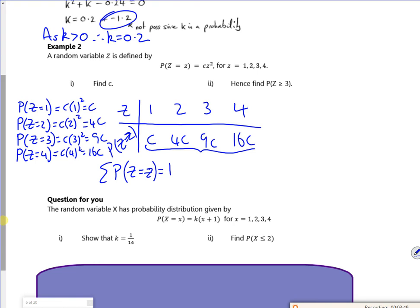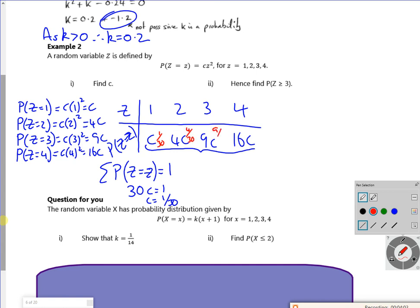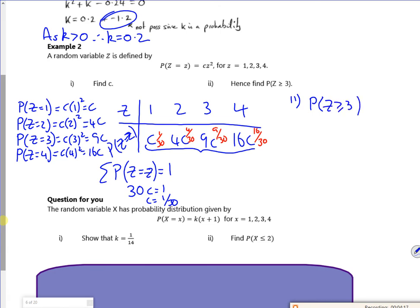So these probabilities are 1 over 30, 4 over 30, 9 over 30, and 16 over 30. And part two says probability that z is greater than or equal to 3. So that's going to be the 9 over 30 plus the 16 over 30, is 25 over 30, which is 5/6.